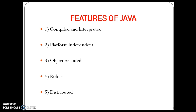But Java combines both concepts — compiled and interpreted. It is a two-step system. First, the Java compiler compiles the source code into bytecode instructions. In the second step, the Java interpreter converts the bytecode into machine language, that is system-understandable code called binary code. By this two-step system, we can say that Java is both a compiled and interpreted language.